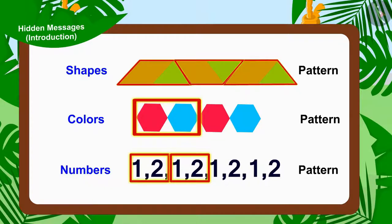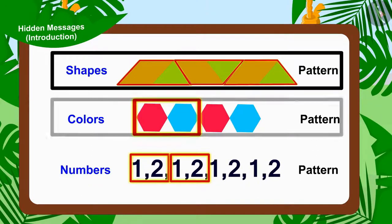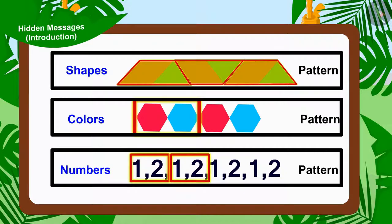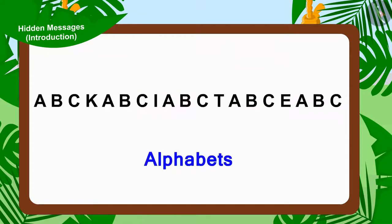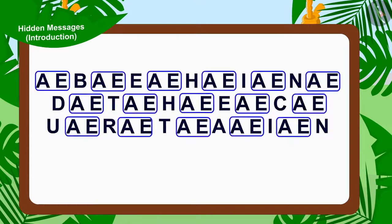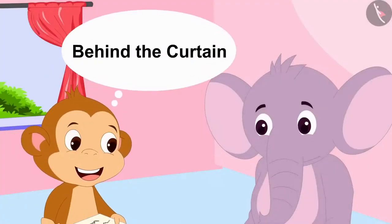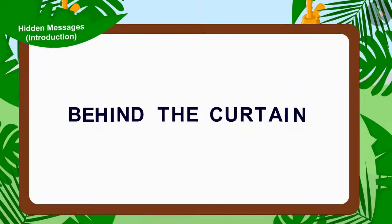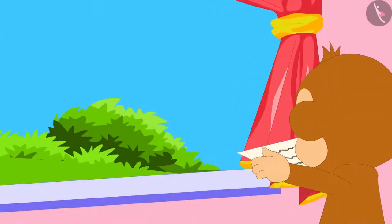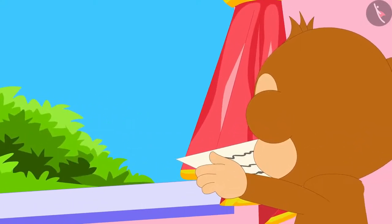Just as we saw patterns made of shapes, colors, and numbers, in the same way we can hide various interesting messages by using alphabets. Appu's letter also has a hidden message between the alphabets. Baban, like us, understood the message hidden in between the alphabets and immediately found the second letter hidden behind the curtain of his house.